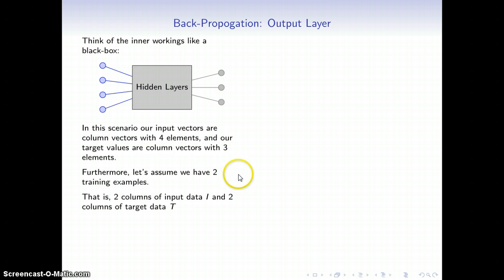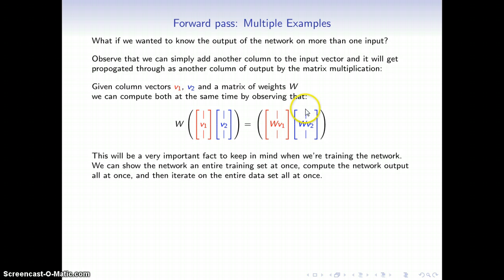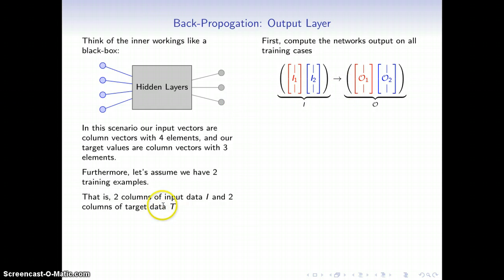For argument's sake, let's suppose we have two different training examples. I have two columns of input data I and two columns of target data T. I'm talking about this because we just discussed it for the forward pass. I'm displaying it with multiple examples here, and you'll see that it works out identically. When we get into the hidden layers, we'll go one column at a time because it's a little more complicated.